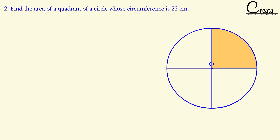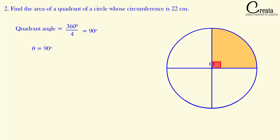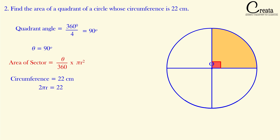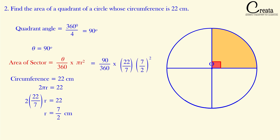So we got angle theta as 90 degrees. In the formula for area of the sector, the missing term is the radius. The hint given is that circumference = 22 cm, and we know circumference = 2πr. So 2πr = 22. Putting π = 22/7 and solving, we got radius = 7/2 cm. Now applying the area of sector formula with theta = 90° and r = 7/2 cm, on solving we got our answer as 77/8 cm².